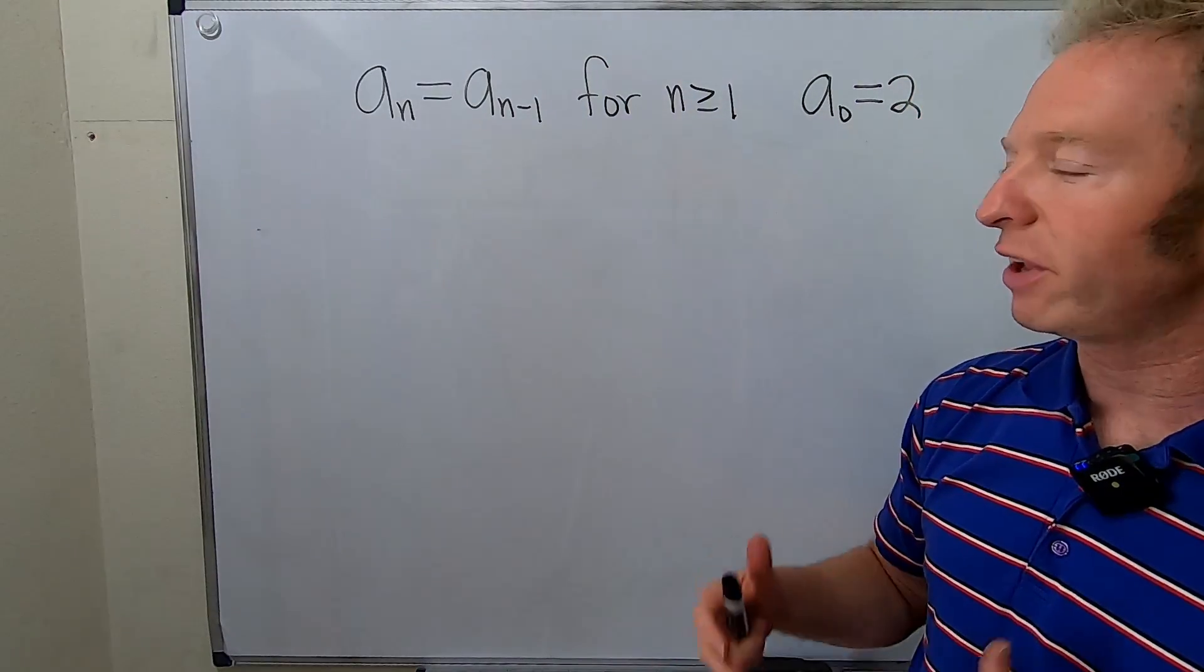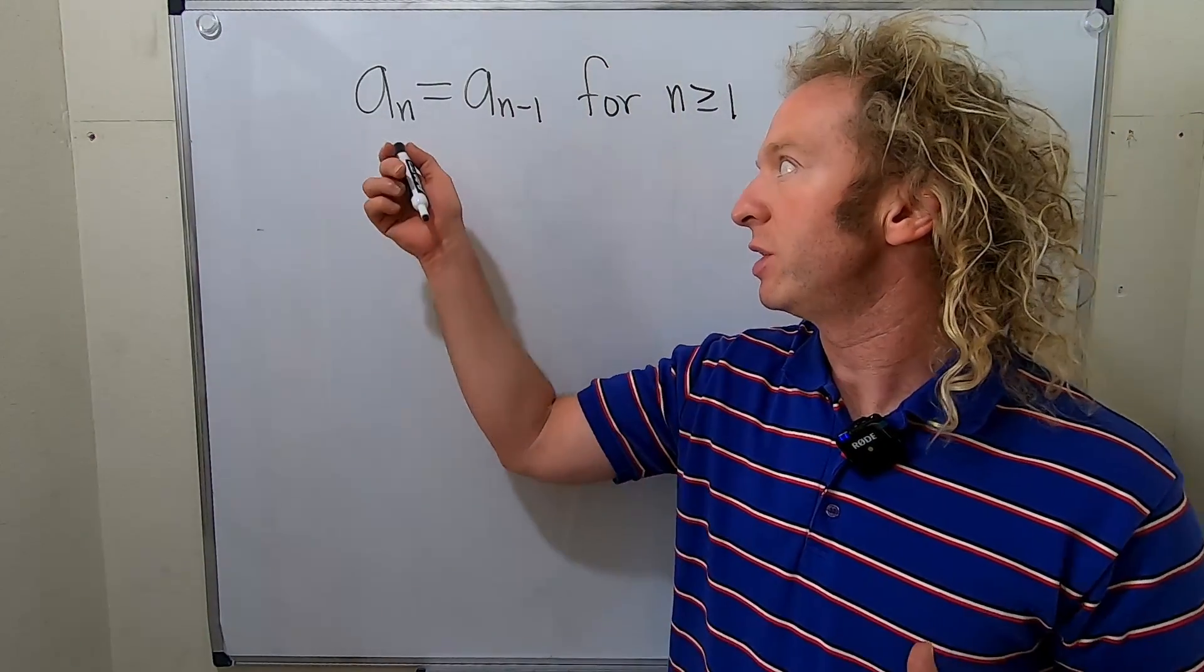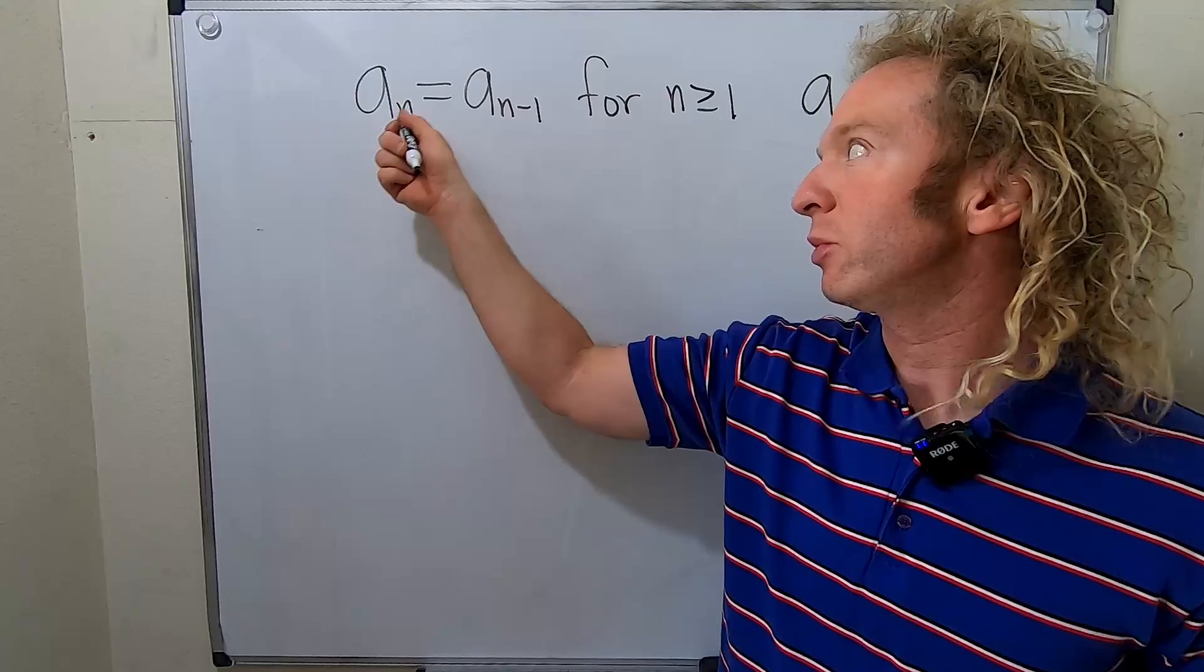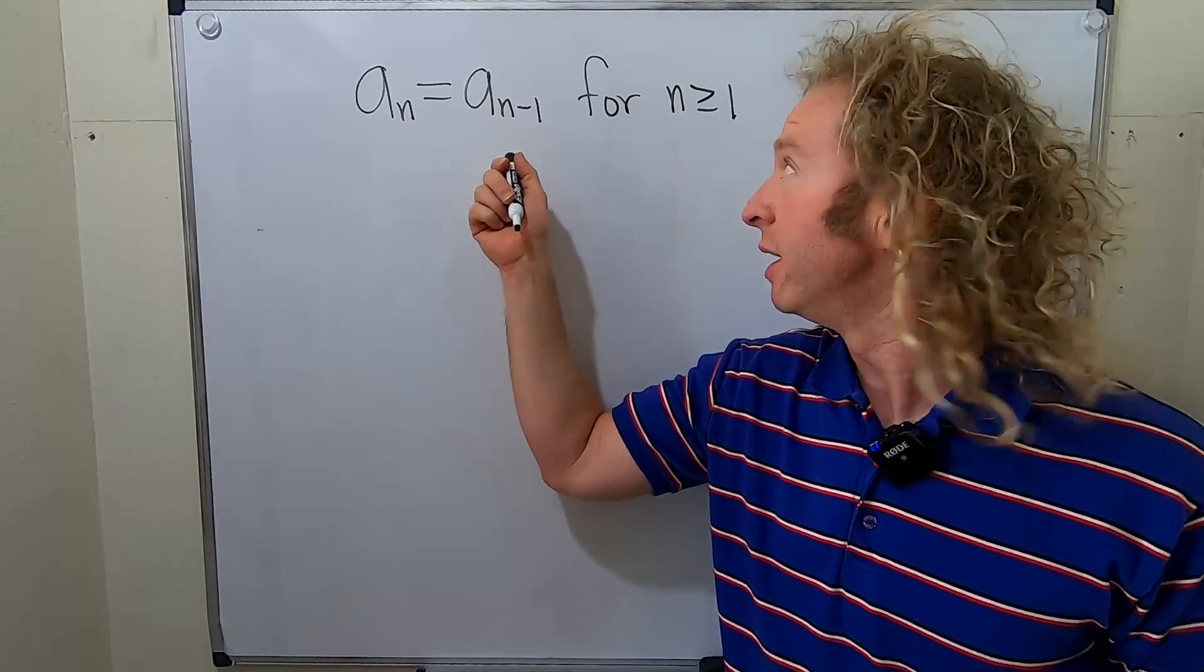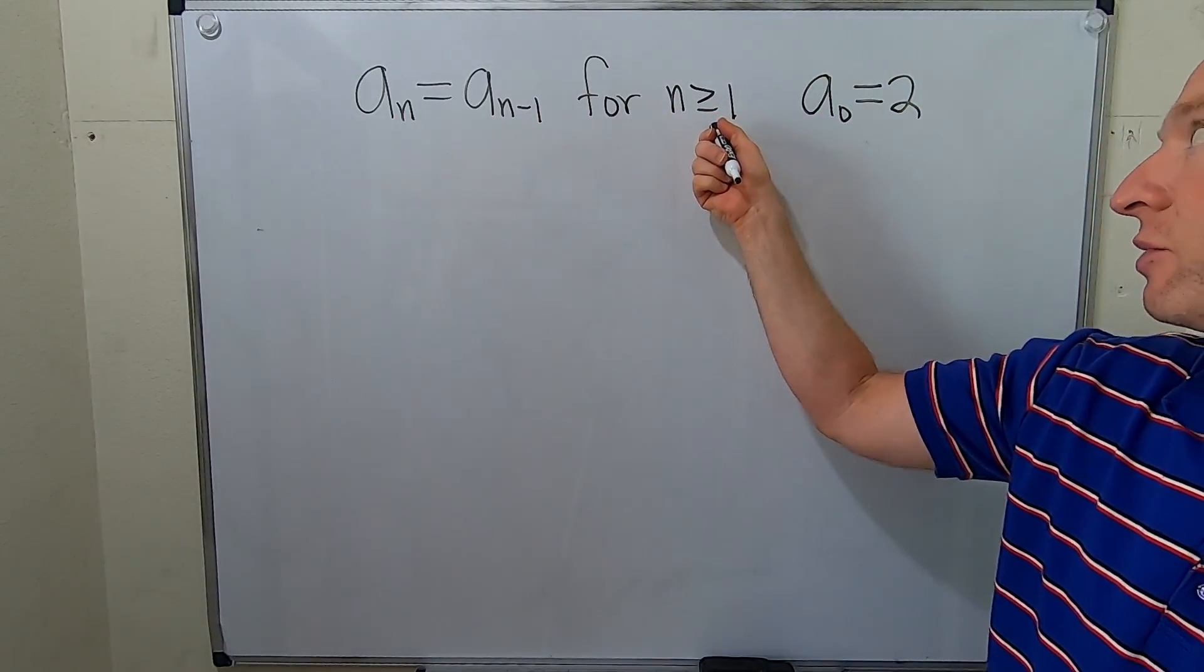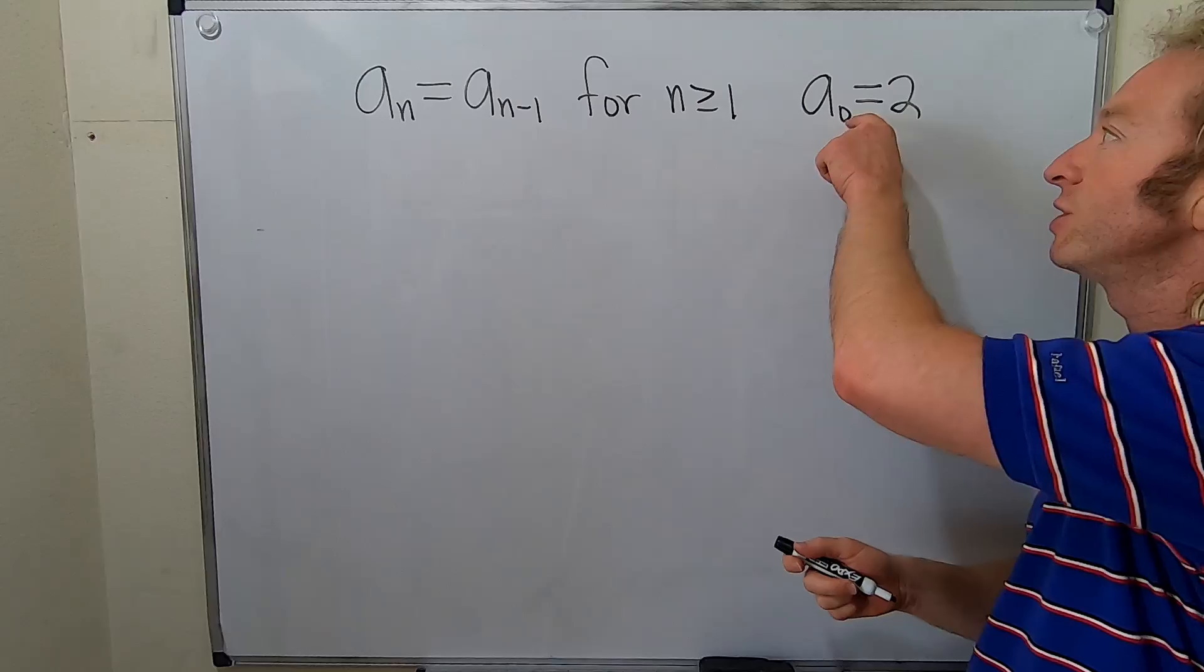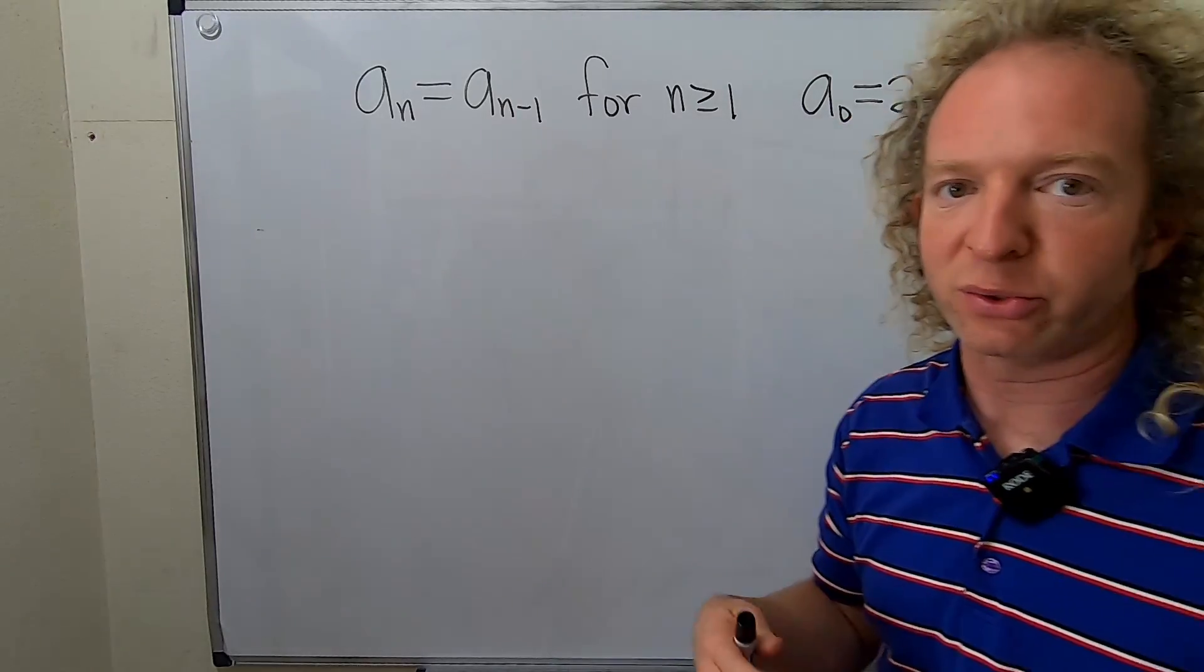Hi everyone, in this video we're going to solve a recurrence relation. The equation is a sub n equals a sub n minus one, and this is valid for n greater than or equal to one. We have an initial condition of a sub zero equals two.